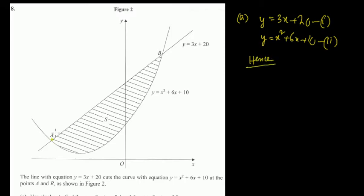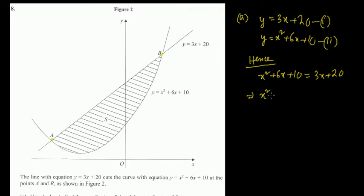We have to find the coordinates of A and B, which are the points of intersection. So it would be x squared plus 6x plus 10 equals 3x plus 20. Bringing everything to one side: x squared plus 6x minus 3x plus 10 minus 20 equals 0, which gives x squared plus 3x minus 10 equals 0.